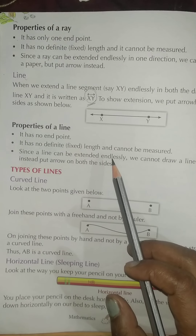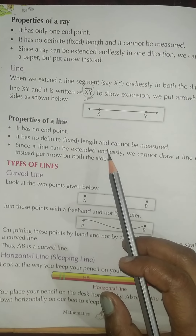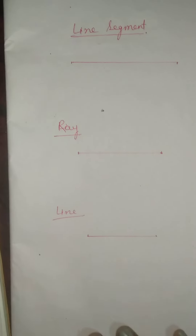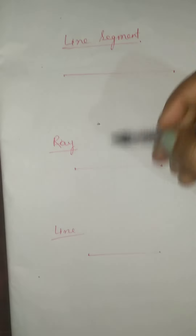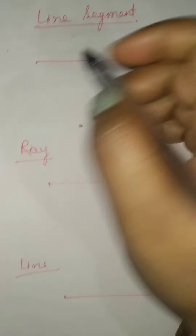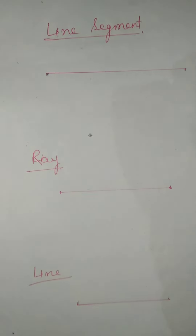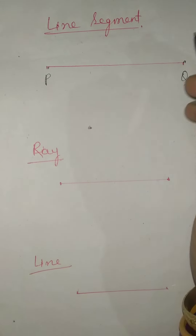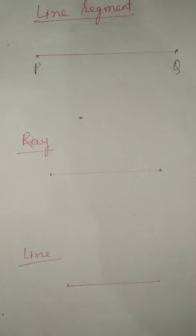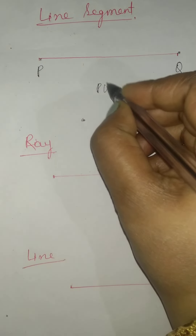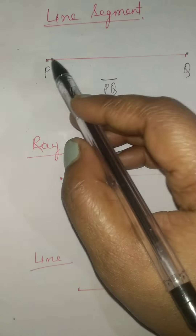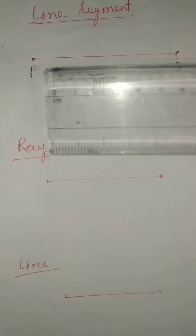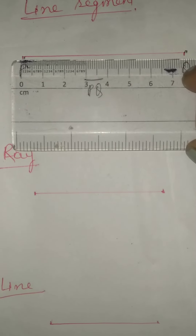So these are the different topics we have learned in this chapter. Now I am going to show you what is the difference between line segment, line, and ray. You can see I have drawn all three. A line segment — two points P and Q are given, the lines are joined, and this line segment is named PQ. A line segment has two end points, and it has a fixed, definite length. Let us measure the length of this line segment.